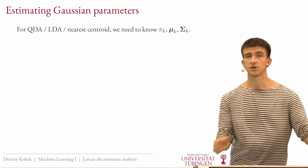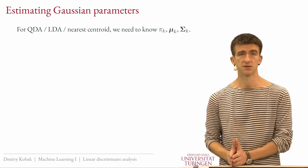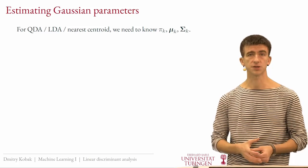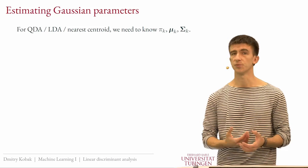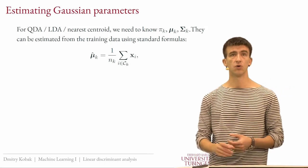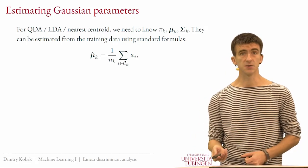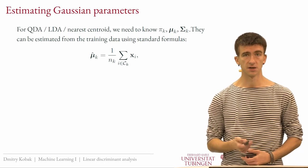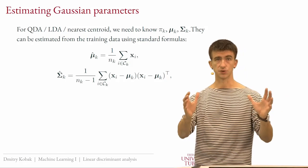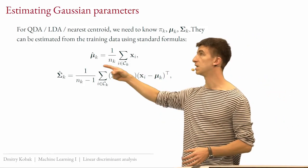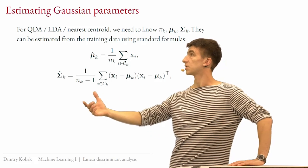So far, everything assumed we know the true covariance, means, and priors. In practice you don't — you have training data and must estimate these parameters. This is straightforward: you use the standard formulas for estimating Gaussian parameters. For each class, the mean estimate is just the sample average, and the covariance is estimated by summing squared deviations from the mean and averaging — either with n in the denominator (maximum likelihood) or n−1 for an unbiased estimate.